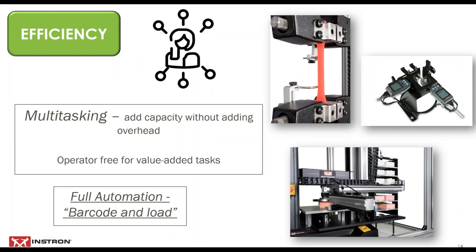The next theme is efficiency, and this is one of the benefits that often gets overlooked. Labs are able to free up operators from time that would typically be spent directly in front of an Instron system, allowing them to perform other value-added tasks, including things like specimen preparation, analyzing results, or writing reports. Fully automated systems take efficiency to the extreme. Operators are only needed to barcode specimens and then load them into the system, which typically takes around one hour per eight-hour shift. The time gained is incredible, and the return on investment for fully automated systems presents a much stronger case than one might initially think.